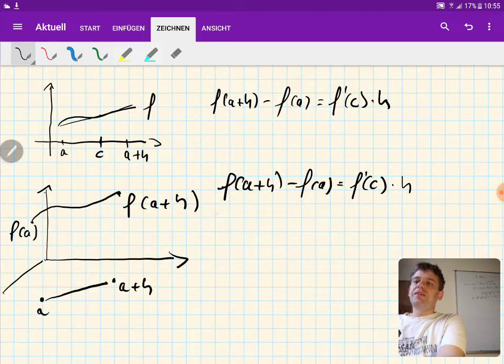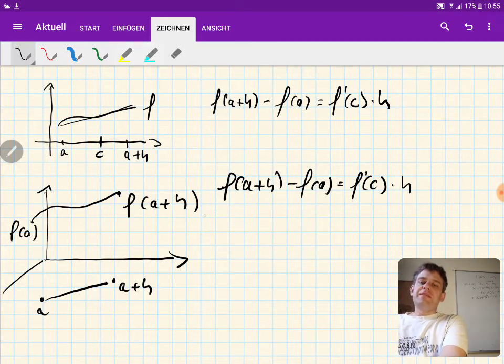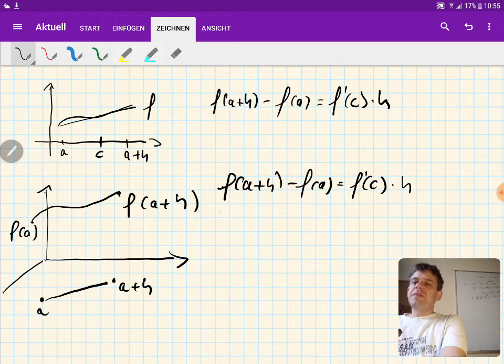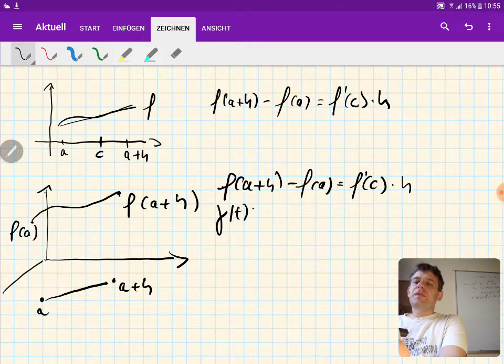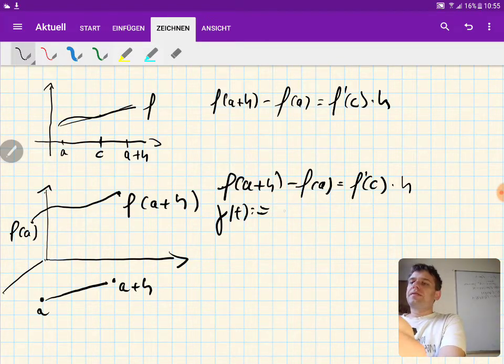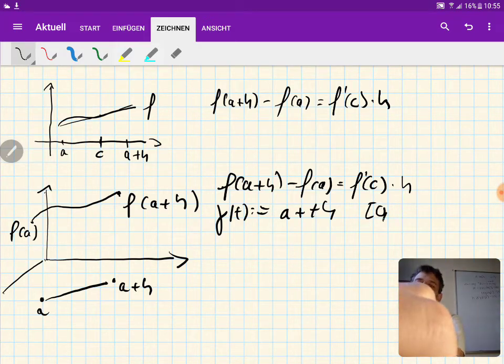For the proof, we shall make our life easy by introducing two functions. The first one gamma, gamma of t. This is defined to be the following: a plus th, where t is in the closed interval zero to one.